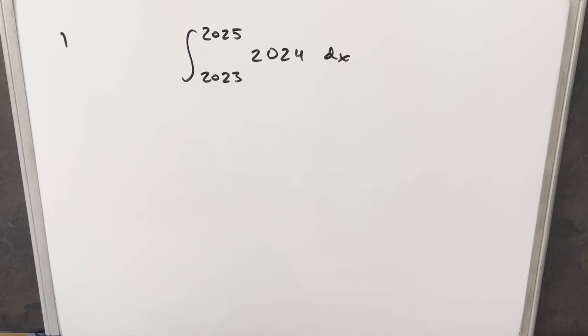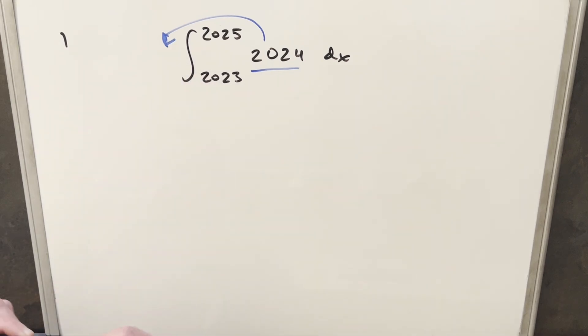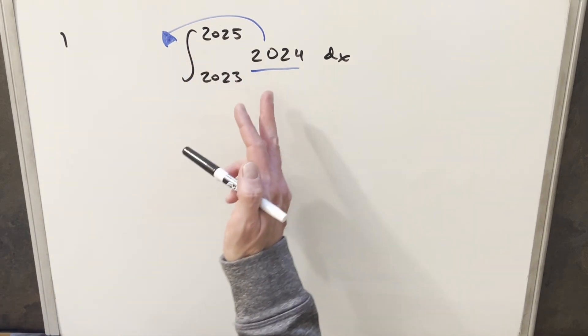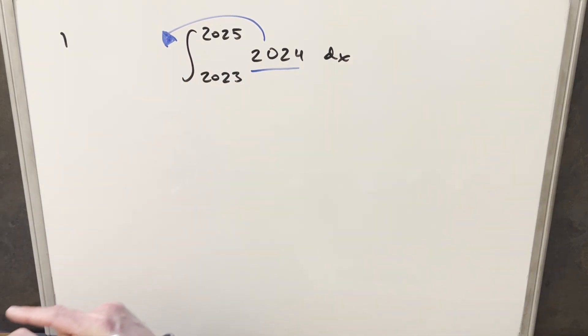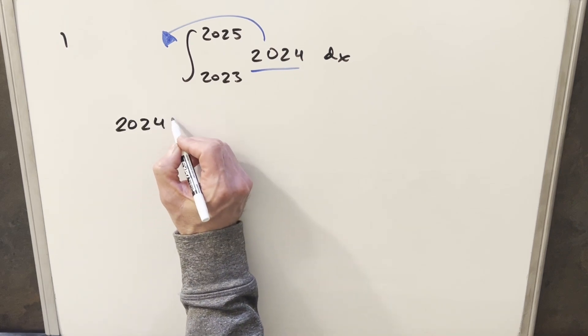Okay, so enough of that. Let's just get to the problem. Now, what we have here, 2024 is just a constant value. We could bring it out front of the integral, but it's not really necessary to rewrite this because the integral of 2024 is just going to be 2024x.